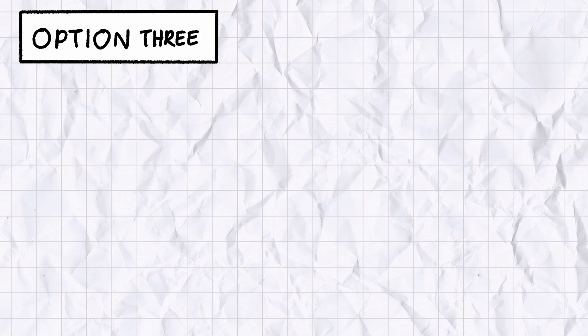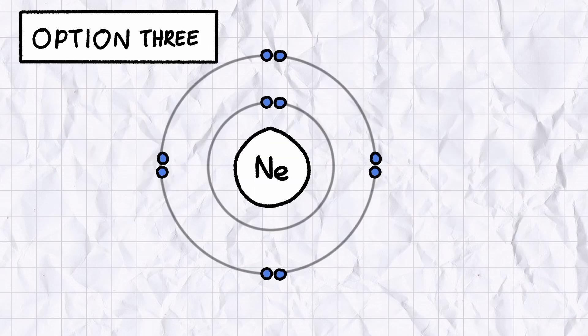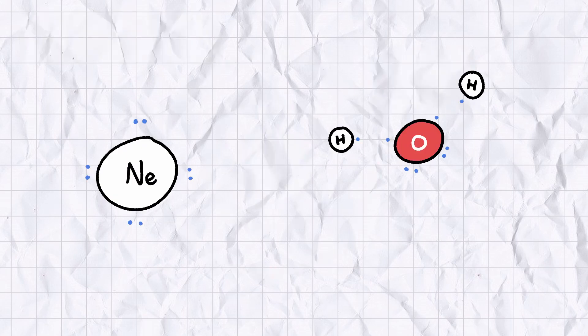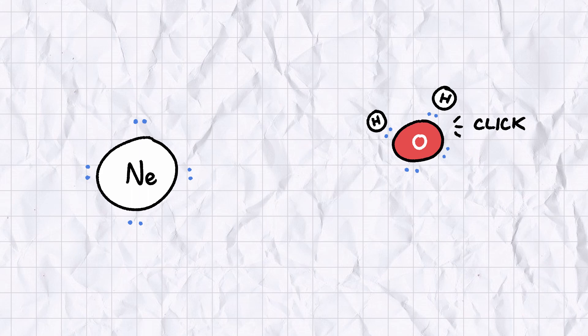Or option three: for noble gas atoms just have a completed shell already and don't bother with any of that chemistry stuff. There's no stability for neon atoms to gain by accepting or donating electrons, which is the process that drives chemical bonding, so there's no incentive to form compounds with other atoms.